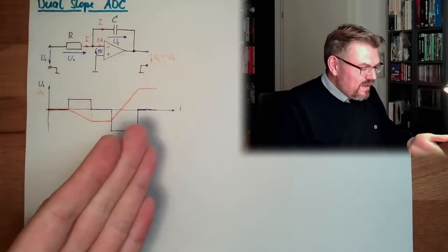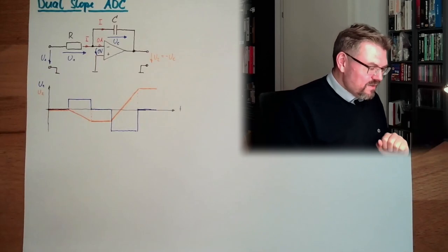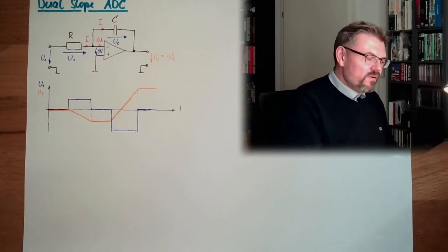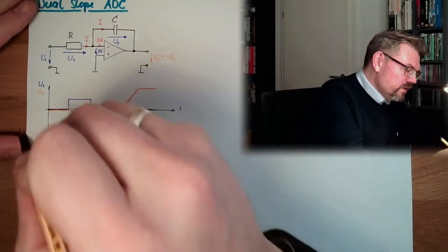This is why it's called integrator, because actually it's building the sum of the area, integrating. It's integrating the input voltage, and if the input voltage stays constant it will grow. If the input voltage is zero it will stay. If the input voltage is on the other side, it will grow in a different direction. So this is our integrator, and this is the base element of our dual slope converter. Here this is called integrator.